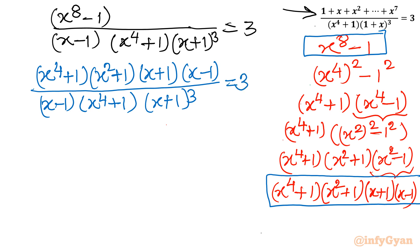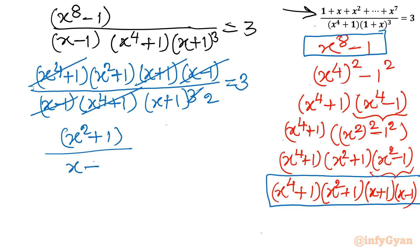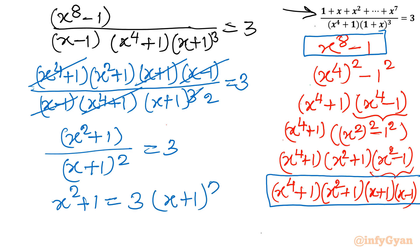Now I will cancel what I can: (x − 1) cancels, (x⁴ + 1) cancels, and one factor of (x + 1) cancels with one from (x + 1)³, leaving (x + 1)². What remains is (x² + 1) over (x + 1)² equal to 3. Cross-multiplying gives x² + 1 = 3(x + 1)².